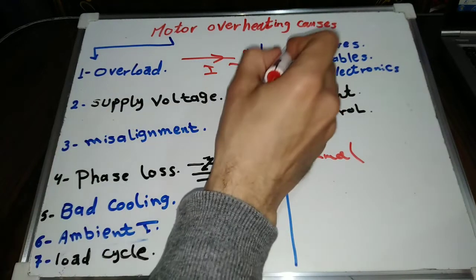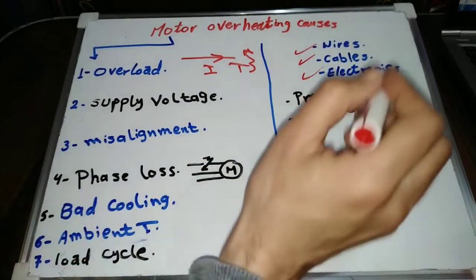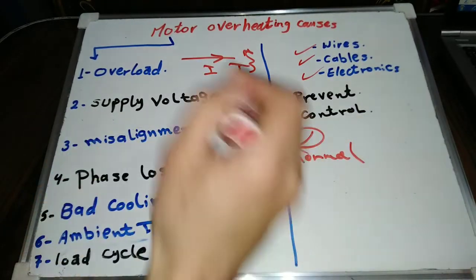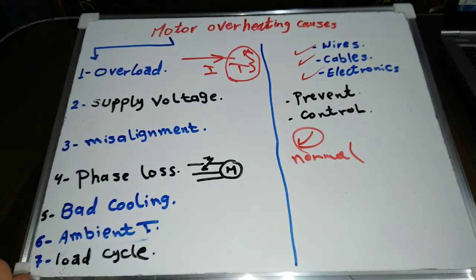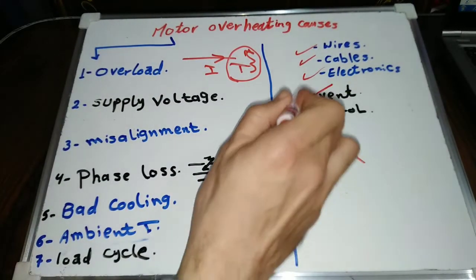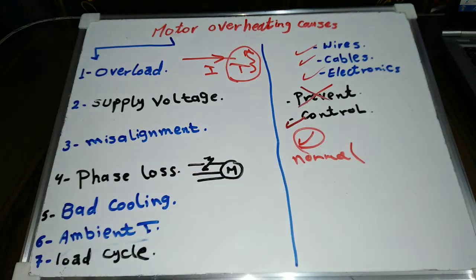All electrical wires, cables and components have electrical resistance. When current passes through a wire, it produces heat as energy losses. While we can't prevent this heat production and losses, we should keep it within limits.